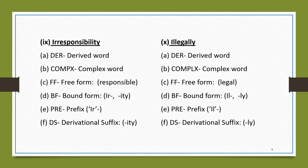The next word is 'illegally.' It is a derived word and a complex word because 'ill' is the prefix and 'ly' is the suffix. The free form is 'legal'; the bound forms are 'ill' and 'ly.' 'Ill' is the prefix and 'ly' is the derivational suffix. 'Legal' is an adjective and 'legally' is an adverb, while 'illegally' is the opposite of 'legally.'